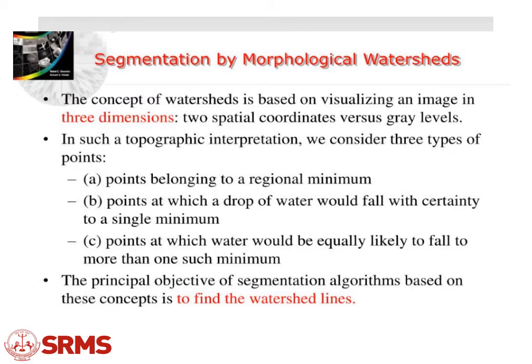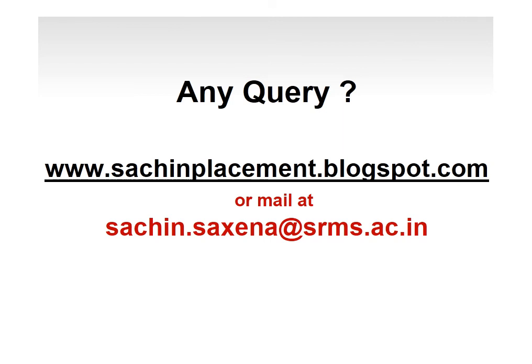The block diagram describes the proposed segmentation approach. Segmentation by morphological watersheds is based on the concept of visualizing an image in three dimensions: two spatial coordinates versus gray levels. In this topographical interpretation, we consider three types of points: points belonging to a regional minimum; points at which a drop of water would fall with certainty to a single minimum; and points at which water would equally likely fall to more than one minimum. The principal objective is to find the watershed lines.